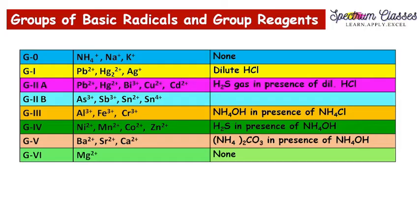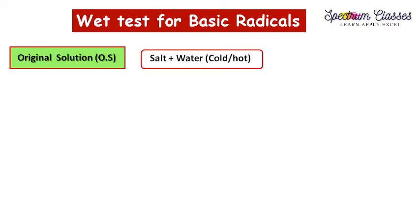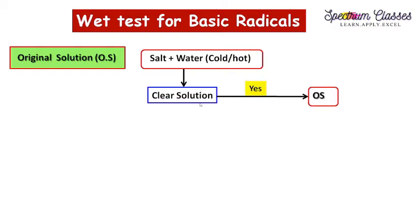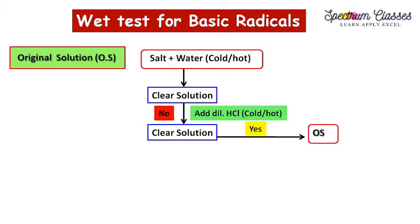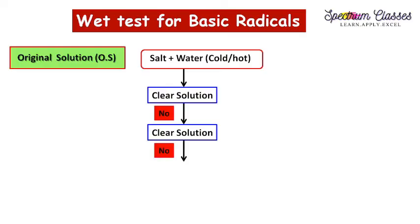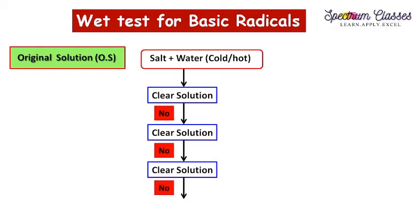Now let's start with the original solution. To prepare the original solution, first take salt plus water, either cold or hot. If you get a clear solution then that is called the original solution. If you don't get a clear solution then add dilute HCl, whether cold or hot, to prepare the clear solution. If you still don't get a clear solution, then add concentrated HCl and heat it.